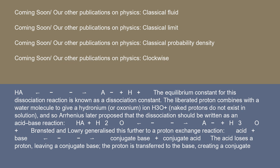Brønsted and Lowry generalized this further to a proton-exchange reaction: acid + base ⇌ conjugate base + conjugate acid. The acid loses a proton, leaving a conjugate base. The proton is transferred to the base, creating a conjugate acid.